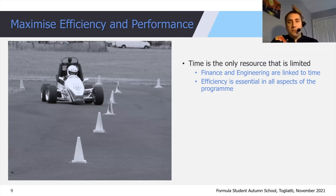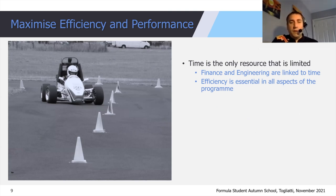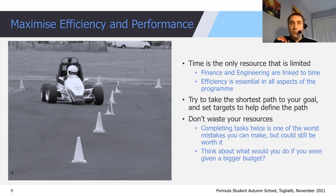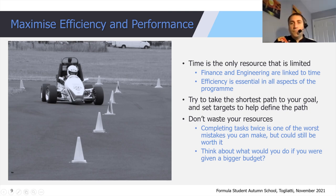Time is a really key resource in Formula Student. There's only so much time to complete the project and the project will start irrespective of whether you're ready. Finance and engineering are clearly linked to time, and efficiency is therefore essential in every aspect of the programme. Look at the picture here — if you didn't have to do the course, you wouldn't slalom through cones, you'd go straight down one side. It's important to set targets to help define that path, and equally important not to waste resources. Completing things twice is probably one of the worst mistakes you could make.